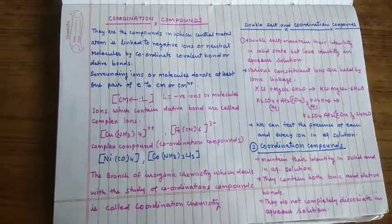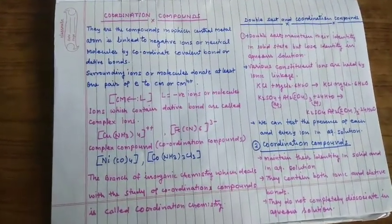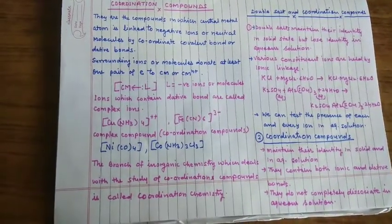For example, KCl MgCl2·6H2O, K2SO4 Al2(SO4)3·24H2O alum. These are double salts.